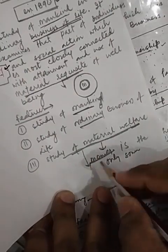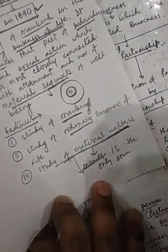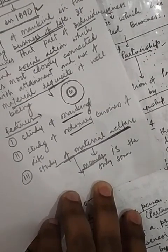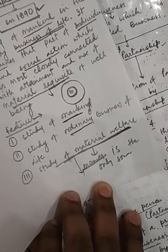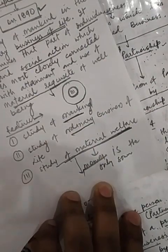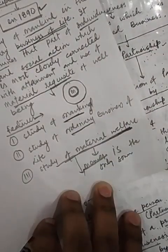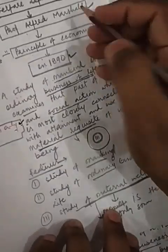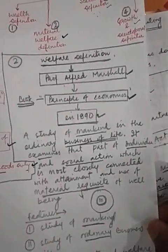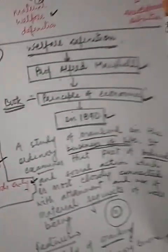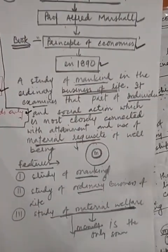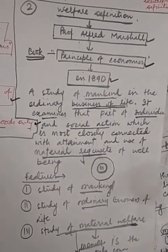It talks about only economic things — the study of material welfare means it talks about the study of material things for which we have paid. For whatever we have paid, only that type of thing economics will consider according to Marshall's definition of economics. Please prepare notes in your copy. My dear students, if you have any problem, you can ask me. Thank you very much for today.